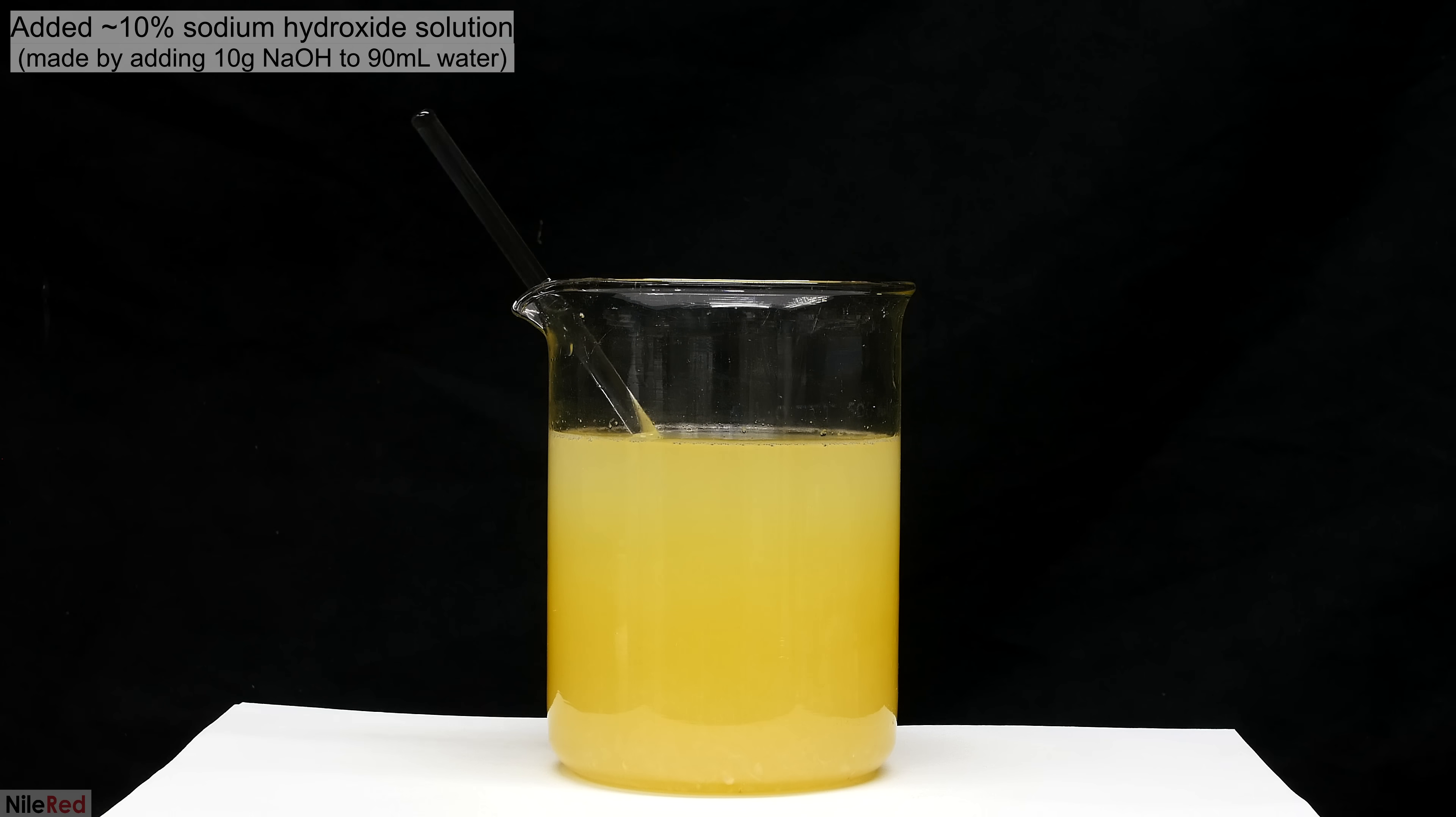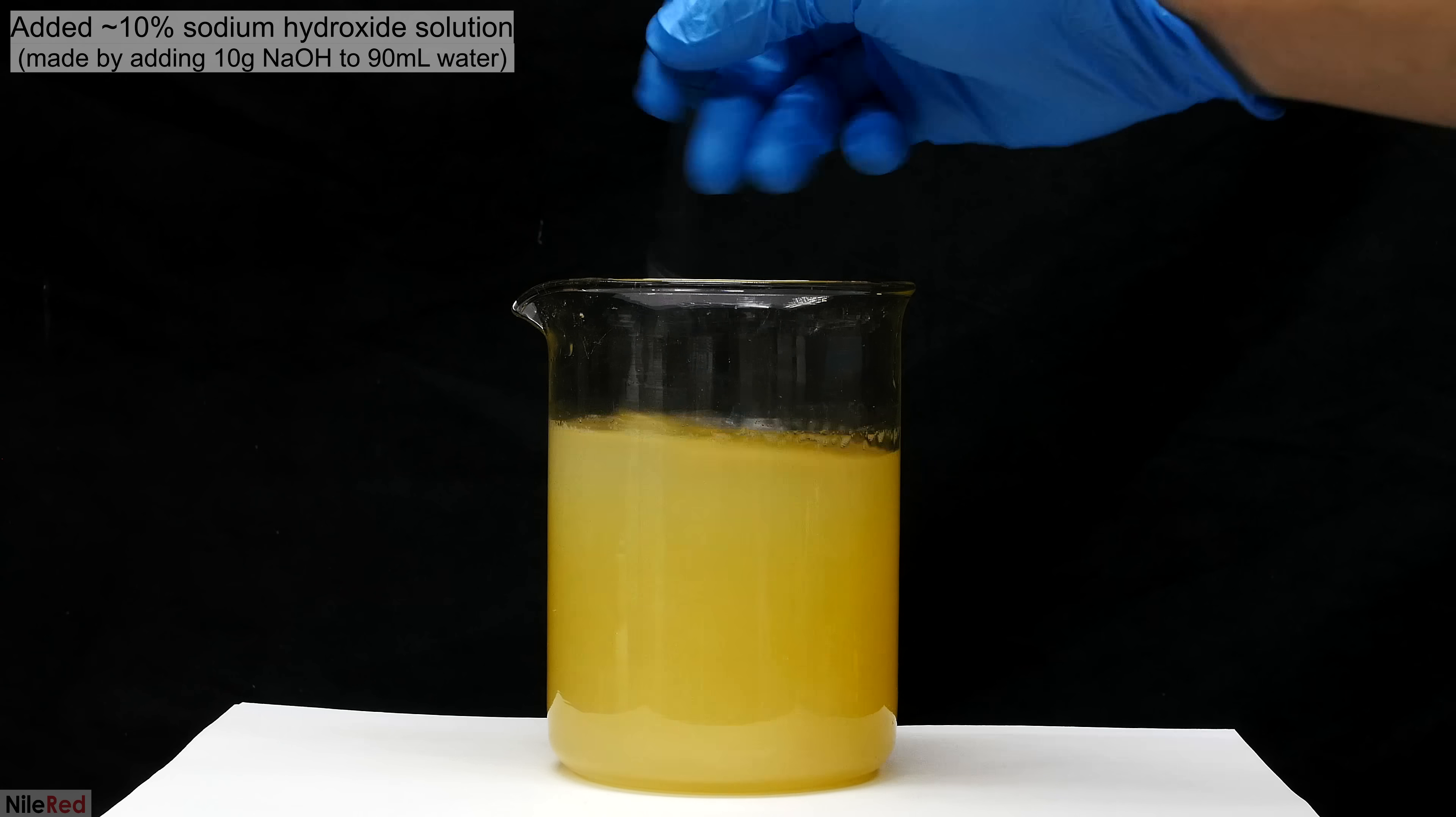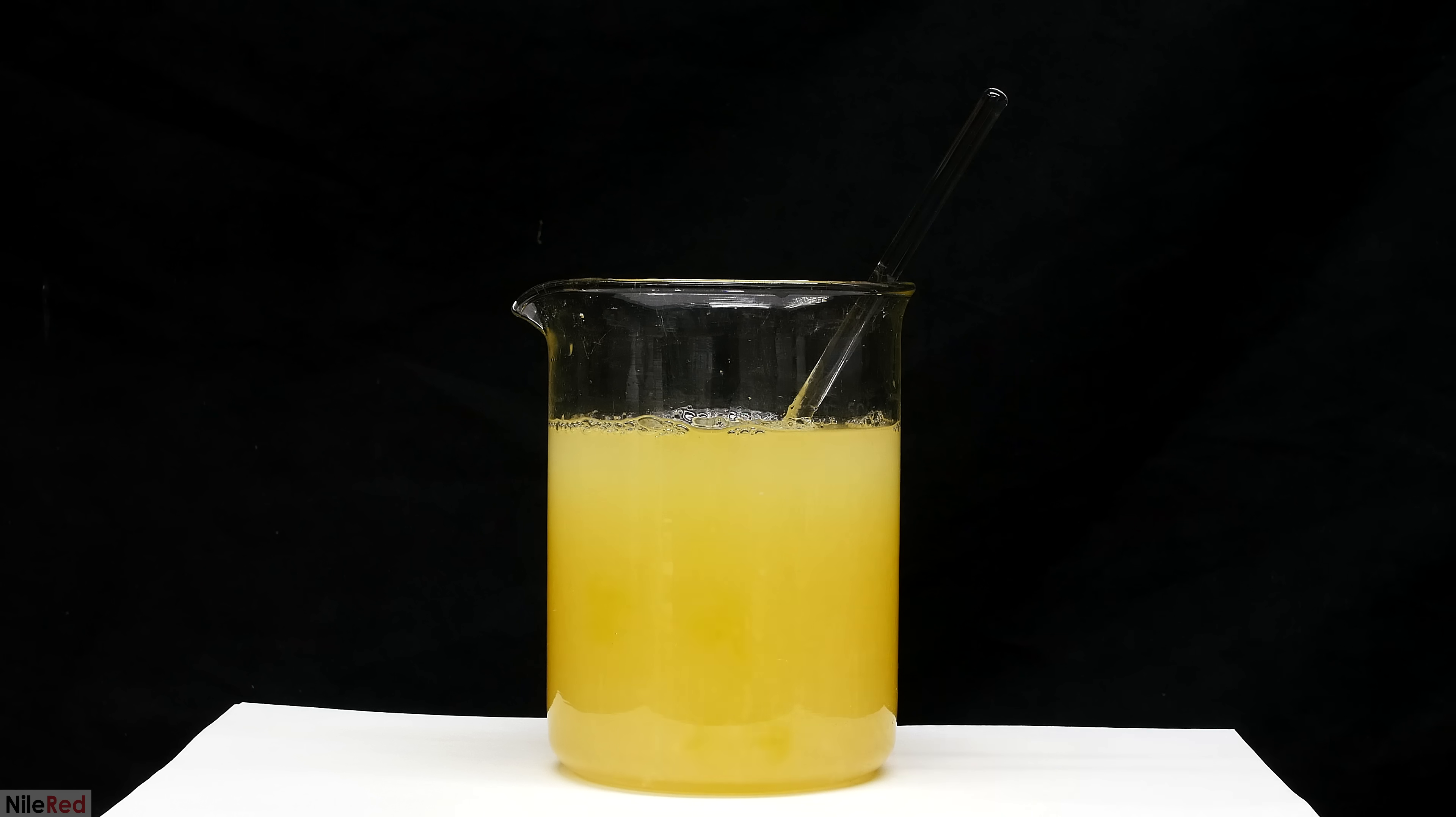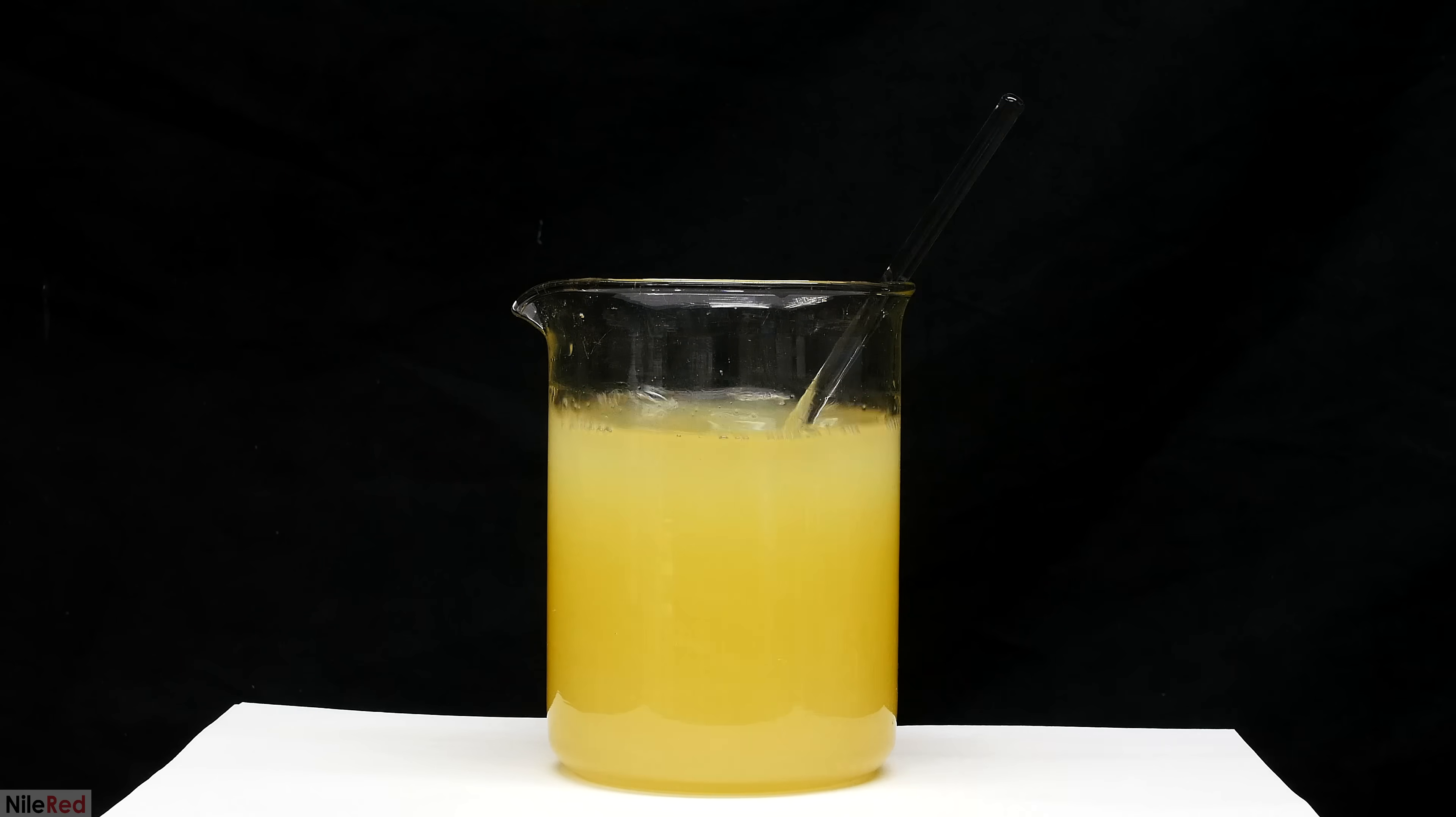A glass stir rod is added to the beaker and then I start to add sodium hydroxide solution. The sodium hydroxide solution is 10% by weight and I'm not exactly sure how much I added. The goal here is to add the sodium hydroxide solution slowly until we reach a pH of about eight or nine.